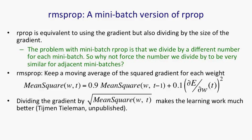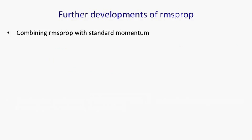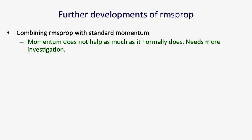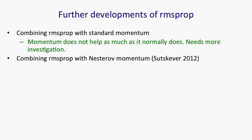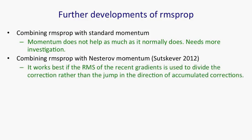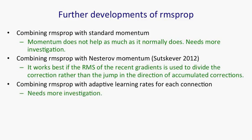That makes the learning work much better. Notice that we're not adapting the learning rate separately for each connection here. This is a simpler method where, for each connection, we keep a running average of the root mean square gradient and divide by that. There are many further developments one could make for RMSProp. You could combine it with standard momentum, though my experiments suggest that doesn't help as much as momentum normally does, and that needs more investigation. You could combine RMSProp with Nesterov momentum, where you first make the jump and then make a correction — Ilya Sutskever has tried that recently and got good results. He's discovered it works best if the RMS of the recent gradients is used to divide the correction term rather than the large jump in the direction of accumulated corrections. You could also combine RMSProp with adaptive learning rates on each connection, which would make it more like RProp, but that needs a lot more investigation.